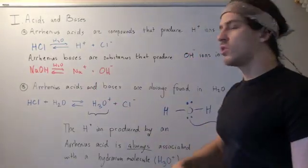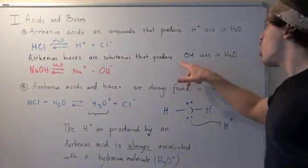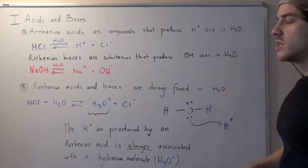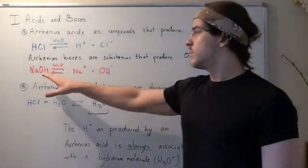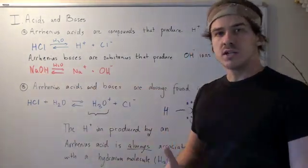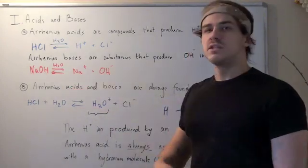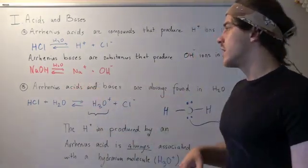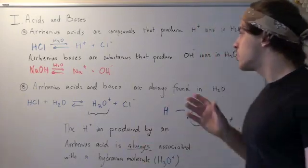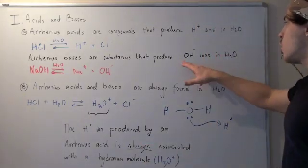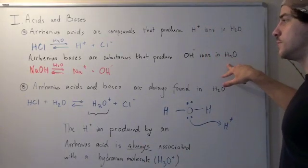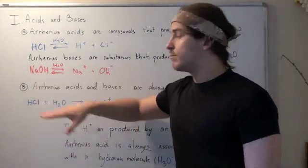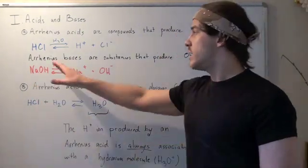Arrhenius bases are those substances that increase OH concentration in water. For example, sodium hydroxide, when mixed with water, dissociates into sodium and an OH ion. That means it increases the concentration of OH ions found in water. Therefore, by definition, sodium hydroxide must be an Arrhenius base.